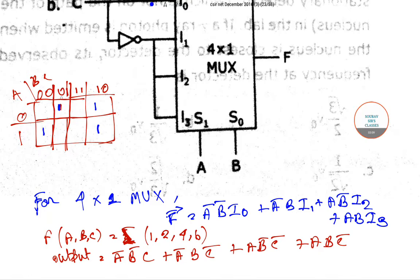From the K-map for minterms 1, 2, 4, 6: minterm 1 (001) gives a-bar b-bar c; minterm 2 (010) gives a-bar b c-bar; minterm 4 (100) gives a b-bar c-bar; and minterm 6 (110) gives a b c-bar.